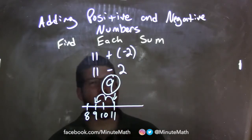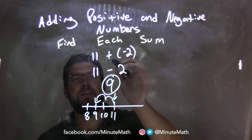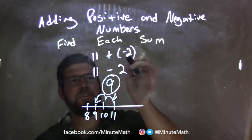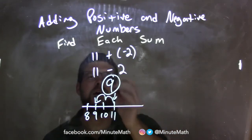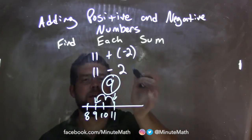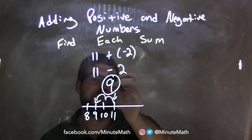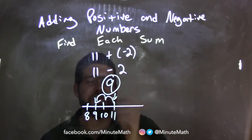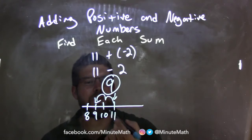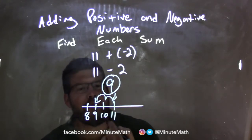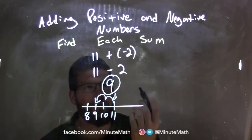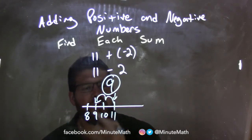So either way works. We can convert the addition of a negative to be a subtraction. 11 plus negative 2 is the same thing as 11 minus 2, which is 9. Or we start with 11 and move to the left 2 units because we're adding a negative 2.